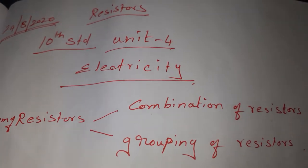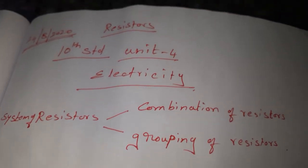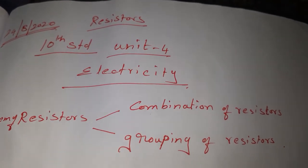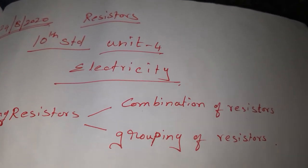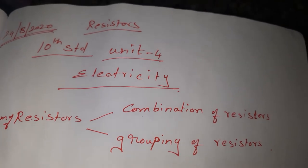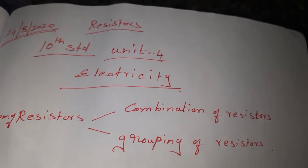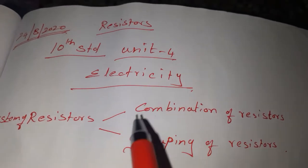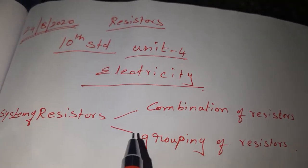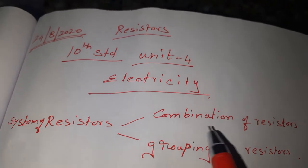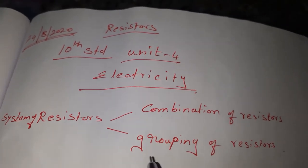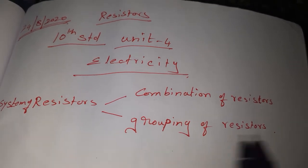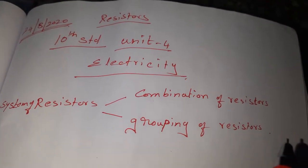In this video we will see the resistors. We have already studied resistance and conductivity, Holmes law, and resistance and conductivity. Here we are going to see the resistors. What do you mean by resistors? A system of resistors means a combination or grouping of resistors. There are many types of combining methods.